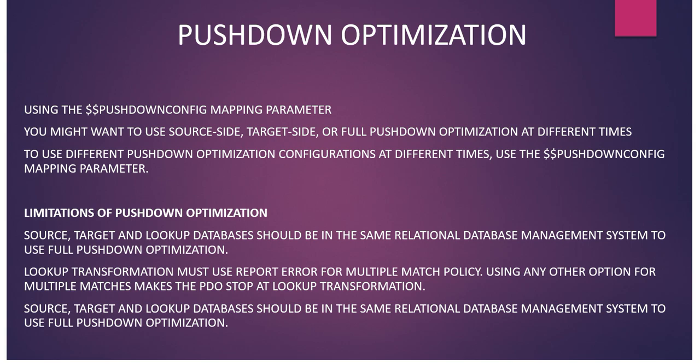There are some limitations to pushdown optimization. The source, target, and lookup database should be in the same relational database management system to use full pushdown optimization. The lookup transformation must use the 'report error' option for the multiple-matching policy — using any other option for multiple matches makes the pushdown stop at the lookup transformation. Source, target, and lookup database should all be the same relational database if you want to use full pushdown optimization.